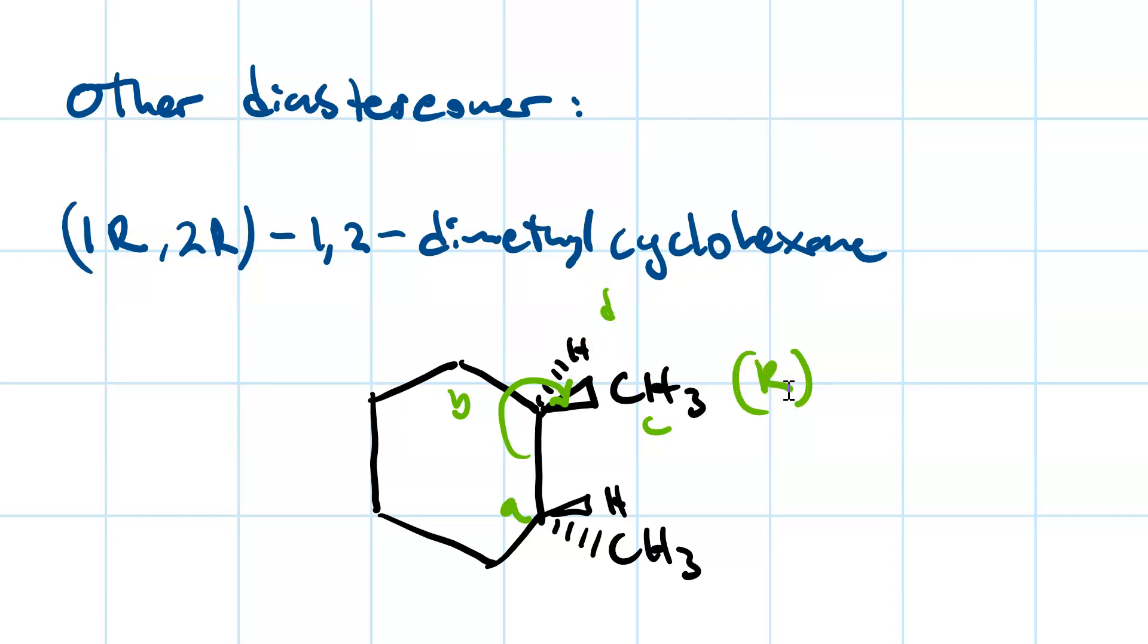When we prioritize the groups on carbon two, carbon one is priority A. Carbon three is priority B. And the methyl group is priority C. The hydrogen is D. Counterclockwise with the hydrogen on the wedge. So, that, once again, is R.